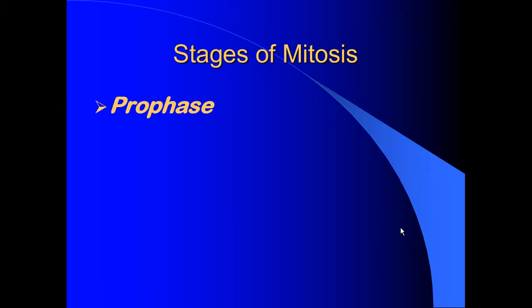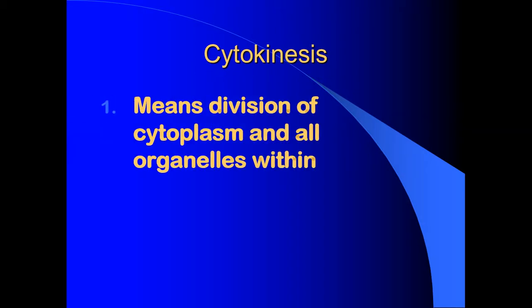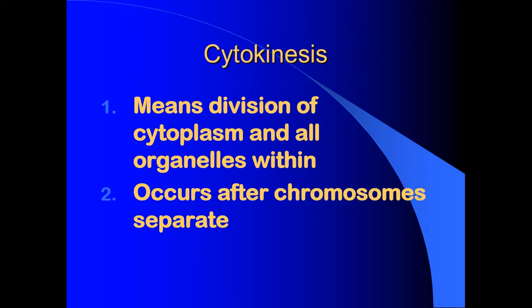So let's look at the stages of mitosis. The first stage is prophase. Mitosis has sub-phases: prophase, metaphase, anaphase, and telophase. Just remember the order with PMAT — prophase, metaphase, anaphase, telophase. After mitosis you have cytokinesis, which means the division of the cytoplasm and all the organelles within it. This is where it divides up all the rest of the organelles — all the mitochondria, all of the endoplasmic reticulum, all the Golgi bodies, and anything else in your cell. This occurs after the chromosomes separate, so the first priority is to get the DNA duplicated and pushed to two ends of the cell, and then everything else splits up so that the two new cells have matching organelles and matching DNA instructions.